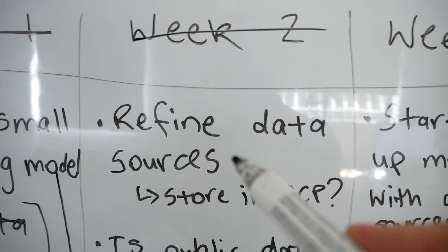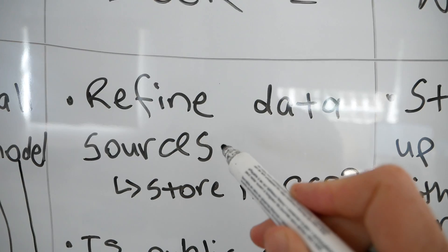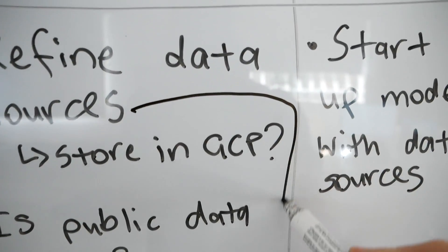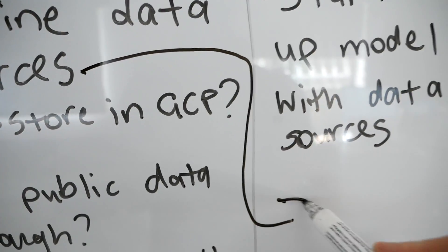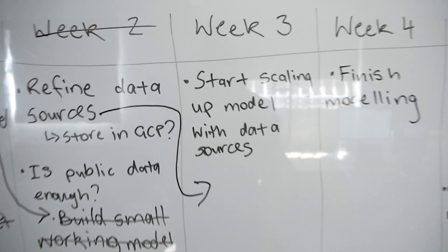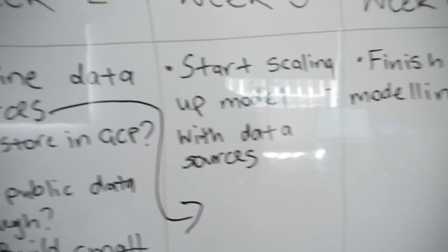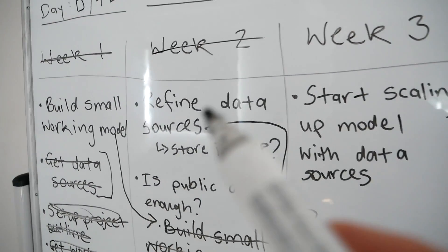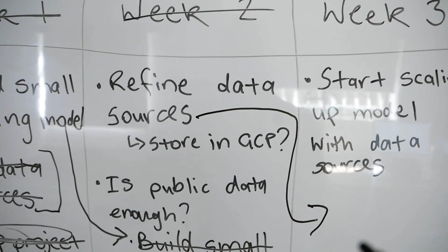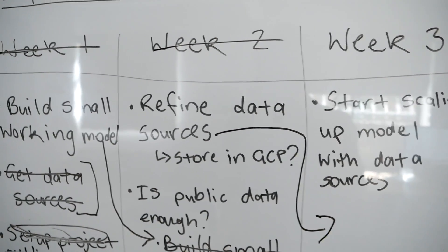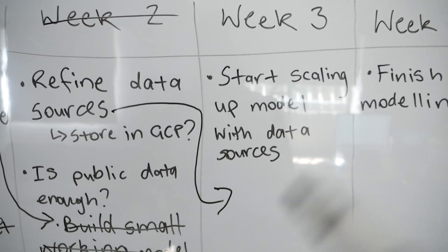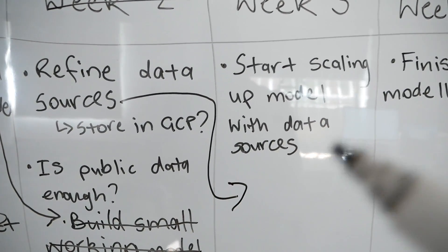Week three: refine data sources. We want to get all of our images ready in week three and start scaling up the model with data sources. That would make sense if we refine the data sources first — get all of the Open Images images ready for Detectron2.